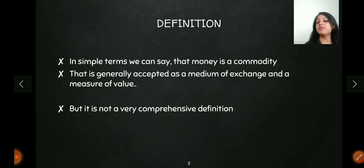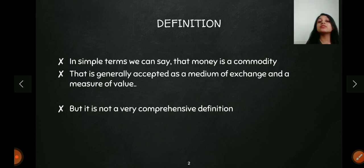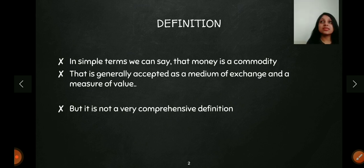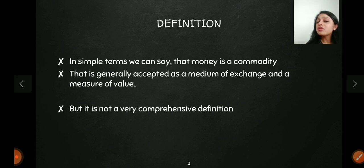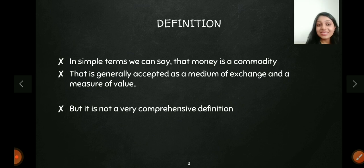For example, if I want to buy something and go to the market, in return I can pay in terms of money — so it has become a medium of exchange. It is also a measure of value: if I have a cow, the value of that cow can be ascertained in monetary terms. Now this is not a very comprehensive definition because money has a lot of functions, but these are the core things by which we identify money.